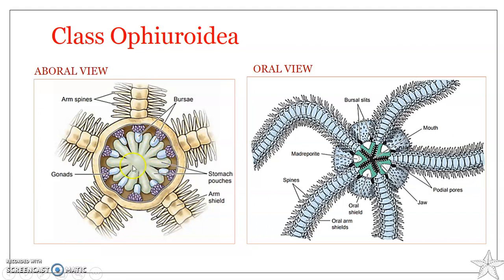When the aboral disk wall is removed, you can see a very extensive stomach pouch and structures known as bursae. The bursae are membranous sacs that invaginate from the oral surface of the central disc. They are fluid-filled sacs in which water constantly circulates, helping in respiration, and they also serve as brood chambers.